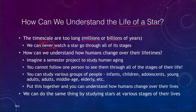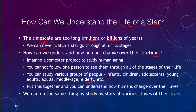One way to understand stars, even though we can't watch an individual star through its life, is to think about how we might understand human aging. Imagine a semester project to study human aging. In a semester you cannot follow one person through all stages of life, but you can study infants, children, adolescents, young adults, adults, middle age, elderly, and so on — and put this together to understand how humans change over their lifetime. We can do the same thing with stars, looking at stars at various stages of their lives to understand the stellar life cycle.